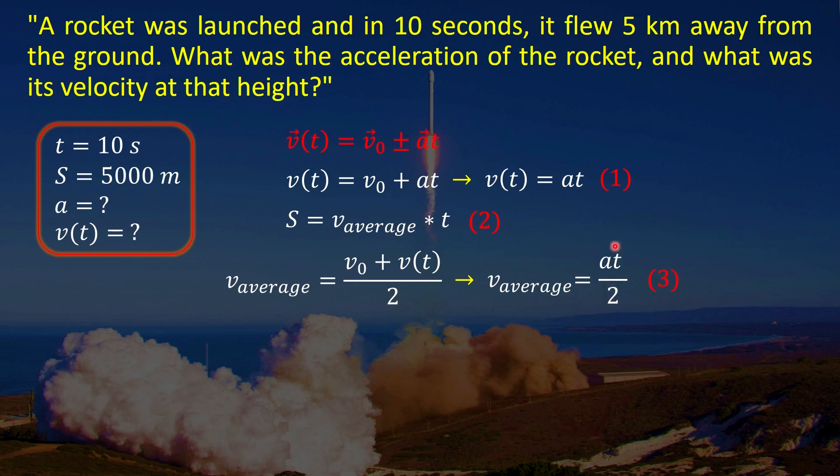So now we can put this fraction to equation number 2. Instead of v average we can put here this fraction. Then we will get this equation. From this equation we can find the acceleration. It will be equal to 2 multiplied by s divided by t squared.